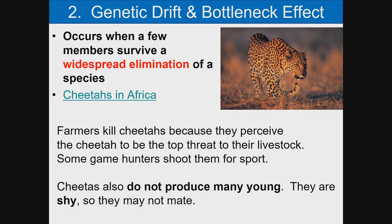The second type of genetic drift is the bottleneck effect. It occurs when only a few members survive a widespread elimination of the species — so in this case, you're looking for death. If most individuals have died, it's the bottleneck effect. One example is cheetahs in Africa: farmers kill cheetahs perceiving them as a top threat to livestock, some game hunters shoot them for sport, and cheetahs also do not produce many young because they are shy and may not mate.